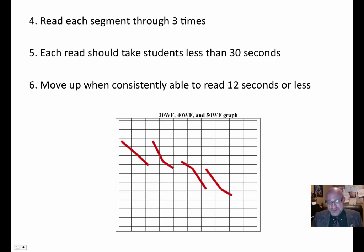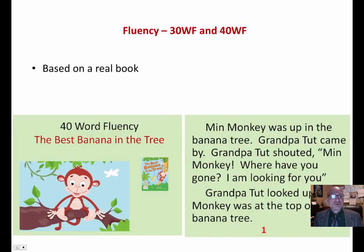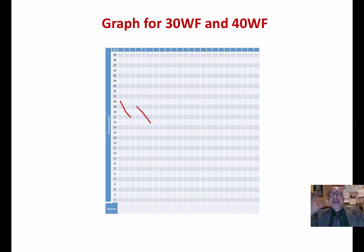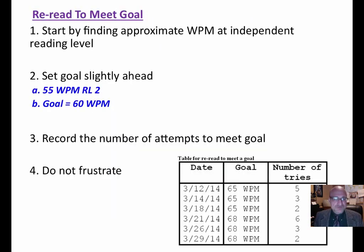If students are consistently able to read in 12 seconds or less, then you need to go up to the next level. I find it easier to take a real book, break it into 30-word segments. You use a lot of repetition and have to do your own editing. Each one should make sense by itself, so every day they have the context of a complete story they're coming back to. Graph your results.